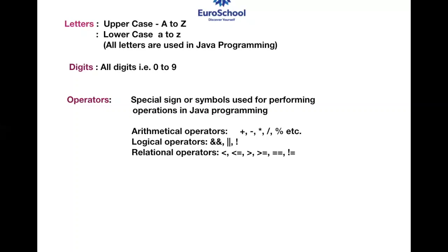There are three types of operators: arithmetic, logical, and relational. Arithmetic operators include plus, minus, multiply — simple calculations. The star sign is used for multiplication, the slash for division, and the percentage sign is also for division. The slash gives you the quotient whereas the percentage sign gives you the remainder. For example, if I divide an even number by two, I should get a remainder of zero, so I'll use the percentage sign.